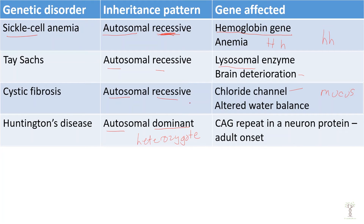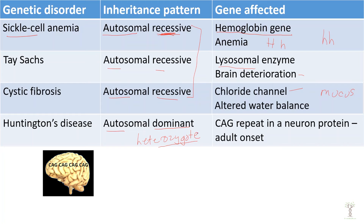That is because when we have recessive mutations, heterozygotes that carry the recessive allele do not have the disease, so the allele can stay in the population. With Huntington's, heterozygotes will have the disease. This mutation affects a protein in neurons that causes CAG repeat sequences. Huntington's stays in the population because it is an adult onset disease, so it doesn't affect people until after they've already reproduced.